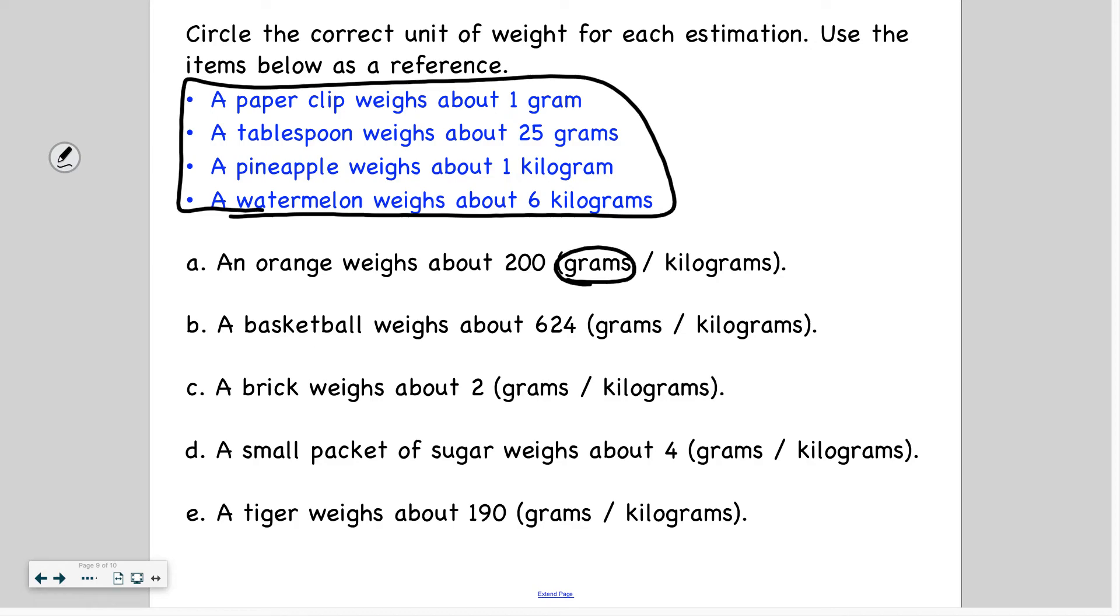A basketball weighs about 624 grams or kilograms. Well, you know basketball is definitely not heavier than a watermelon. And a watermelon is 6 kilograms. So it can't be 624 kilograms because that would be way heavier. I'm going to go with grams again.